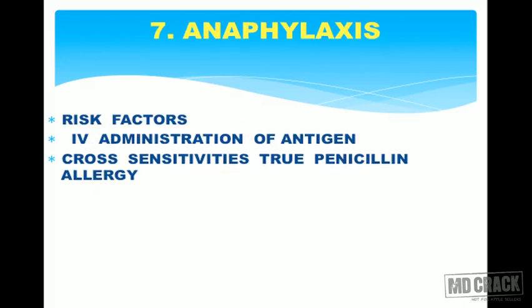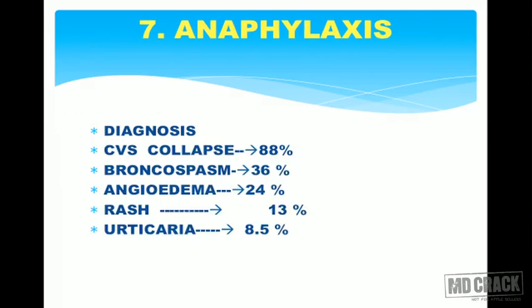Anaphylaxis is another anesthetic emergency. Risk factors include IV administration of any antigen — it could be an antibiotic, analgesic, anti-inflammatory drug, inducing agent, or maintenance agent. Any drug in the world can cause anaphylaxis. Diagnosis: in 88 percent of cases there is cardiovascular system collapse; bronchospasm occurs in 36 percent; angioedema in 24 percent; rash in 13 percent; and urticaria in 8.5 percent.